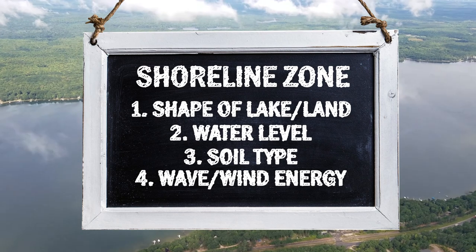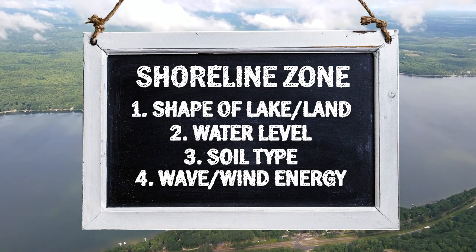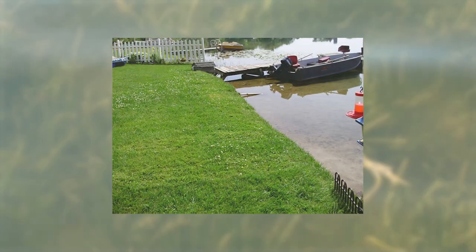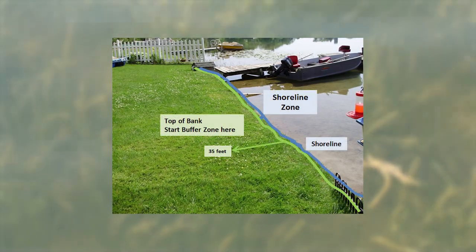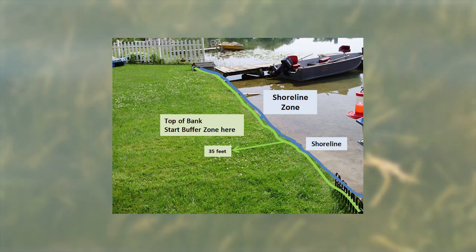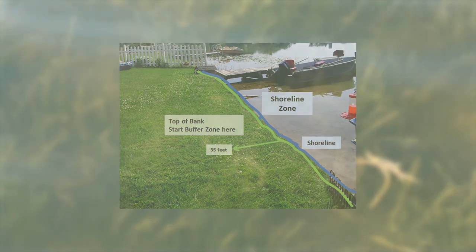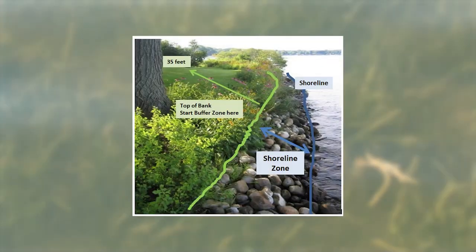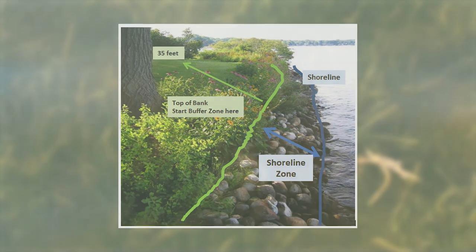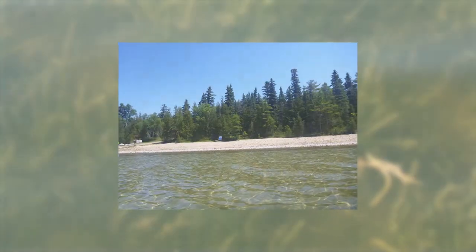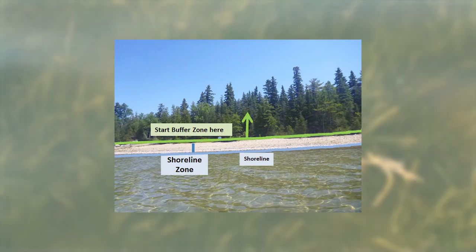These features also influence the amount and type of vegetation from lake to lake. Some properties, such as the one shown here, will have a very narrow shoreline zone. The slope of the property is very gentle and there isn't much space between the shoulder and the toe of the bank. Other properties will have a slight slope and more distance between the shoulder and the toe. Still other properties can have a very wide shoreline zone.